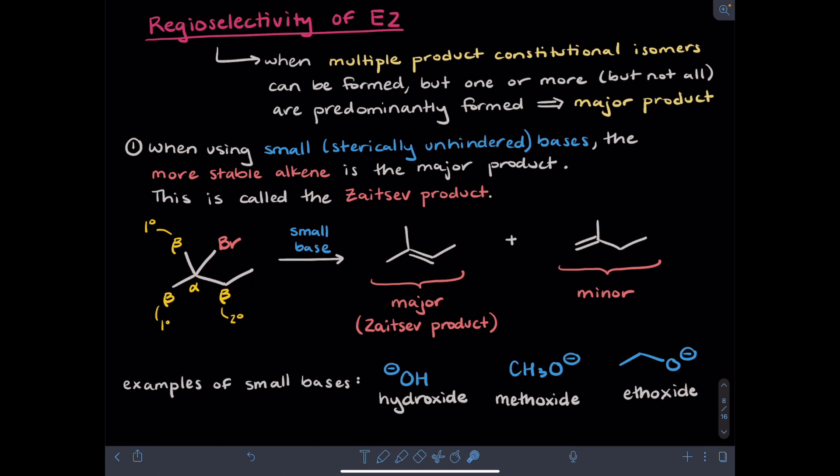Some examples of small bases are hydroxide, methoxide, and ethoxide.